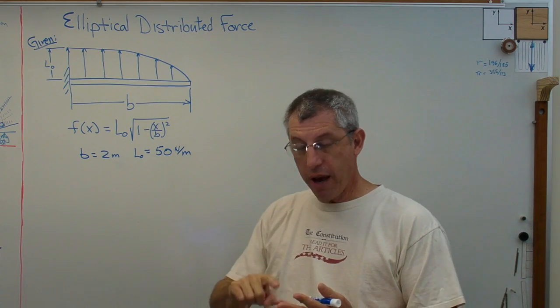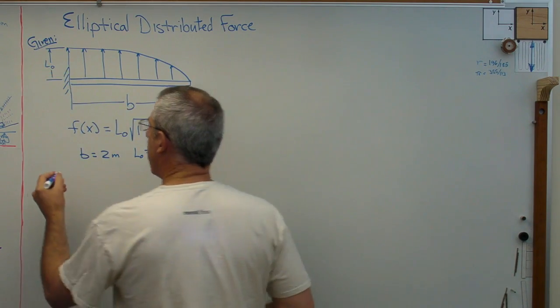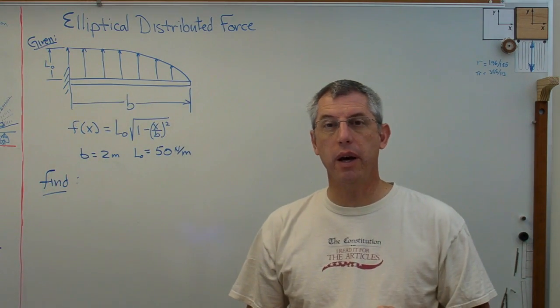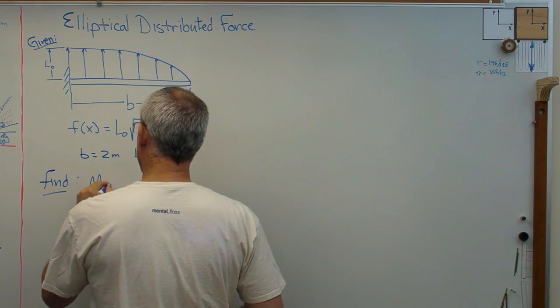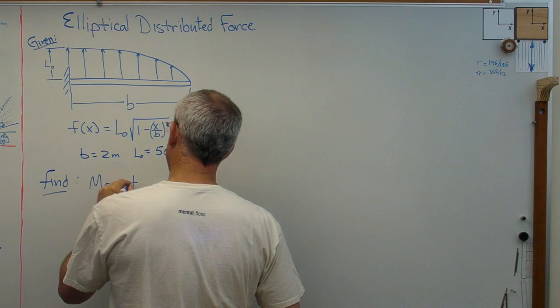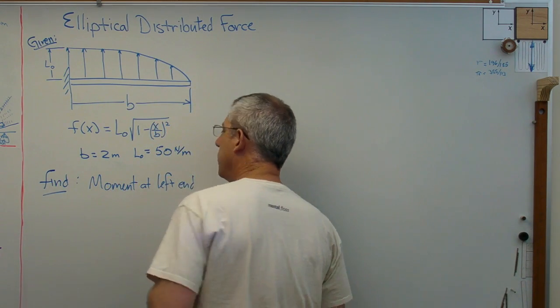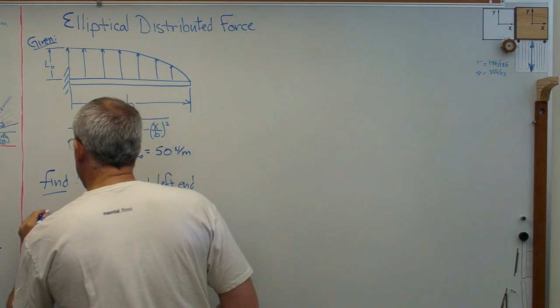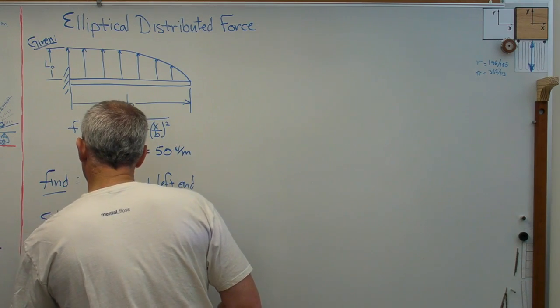So anyway, we're going to go through GFSA format. I've got the given right there. I need to have find because we don't know what we're finding. We don't really have a problem. So what I want us to find is the moment at the left end here. That's actually would be called the root by the aerospace types out there. The S part, I write solution.